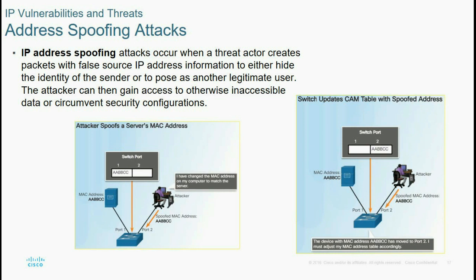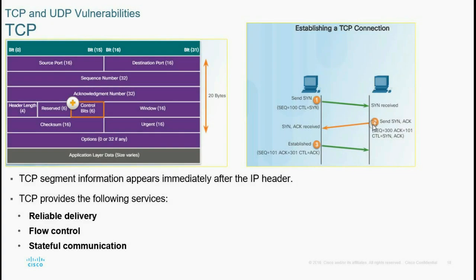Address spoofing attacks occur when a threat actor creates packets with a false source IP address to hide the identity of the sender or to impersonate another legitimate user. Attackers can then gain access to otherwise inaccessible data or circumvent security controls. This is called an address spoofing attack.